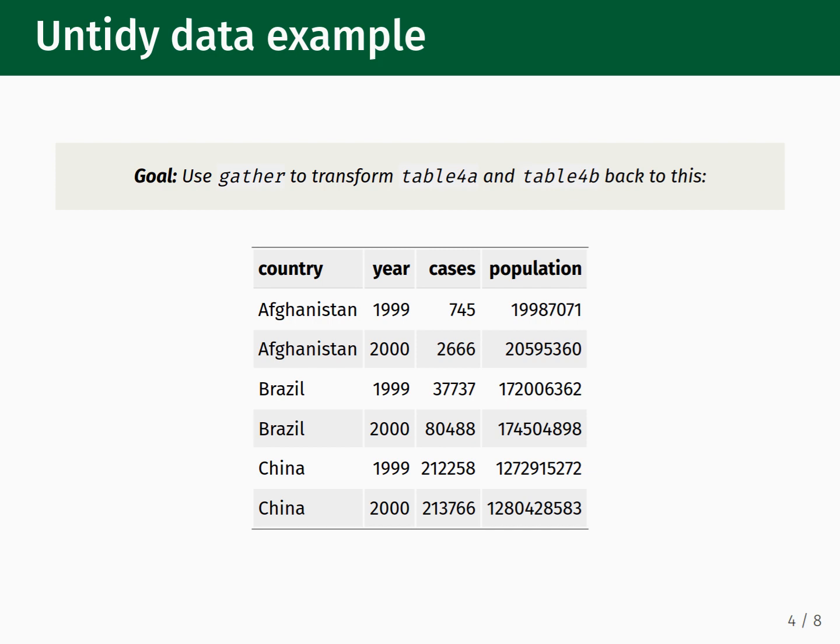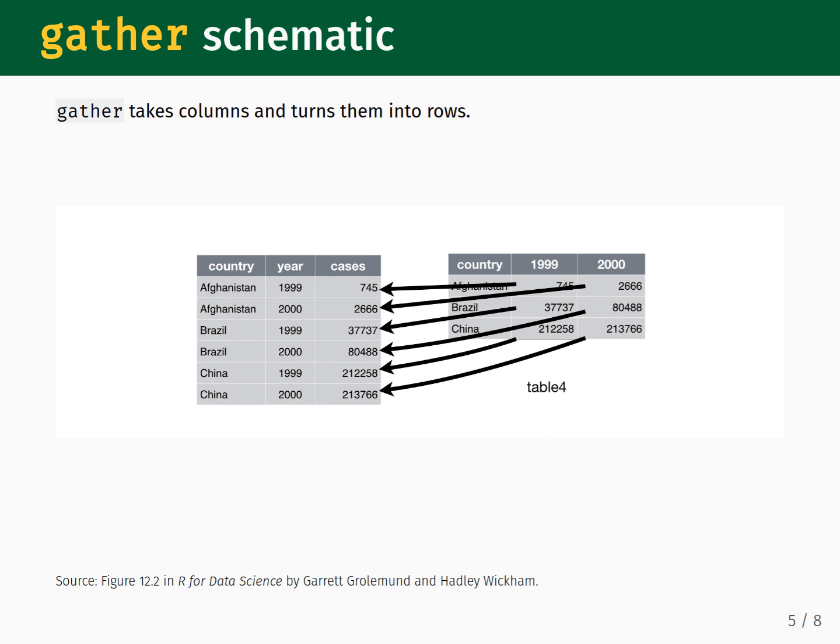Our task is to figure out how to use the gather function to reshape our data from the two tables to the tidy format. This schematic illustrates how we will use the gather function to reshape Table 4A. We are taking the columns named 1999 and 2000 and turning them into rows. The years 1999 and 2000, instead of being column names themselves, become categories under a column named year. Similarly, the values under the 1999 and 2000 columns are all moved to a column named cases. No information has been added, removed, or changed during this reshaping process.